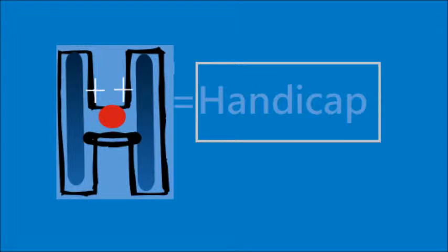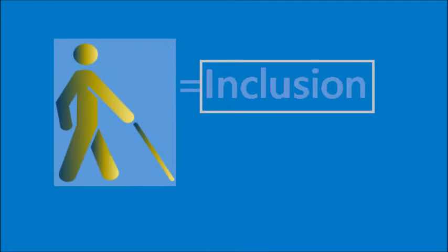H is for Handicap. In the picture we can see the face of a clown, because in this project we are going to use theatre form and clown so as to achieve our goals.